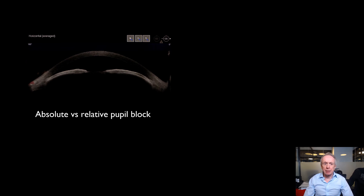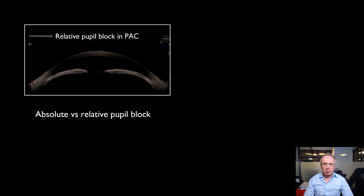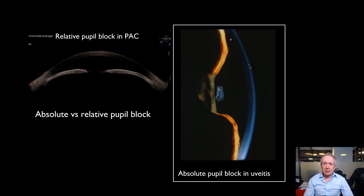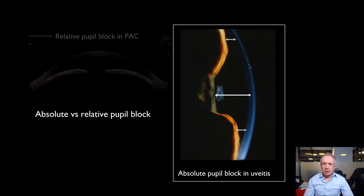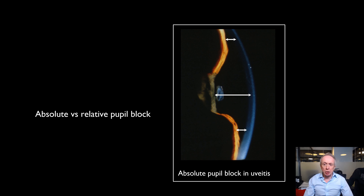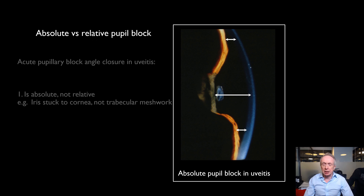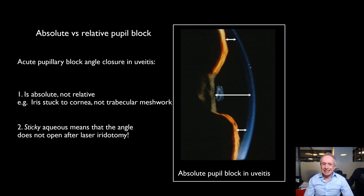Pupillary block in uveitis is different from pupillary block in primary angle closure. In primary angle closure, pupillary block is relative; in uveitis it is often absolute. The chamber may be very deep, as seen here, and the peripheral anterior chamber is not only shallow but the iris is stuck to the peripheral cornea — not just the trabecular meshwork. So it's more dramatic than in primary angle closure. The sticky aqueous ensures that even if you carry out a successful iridotomy in terms of reducing pupil block, the iris may still be stuck to the trabecular meshwork.